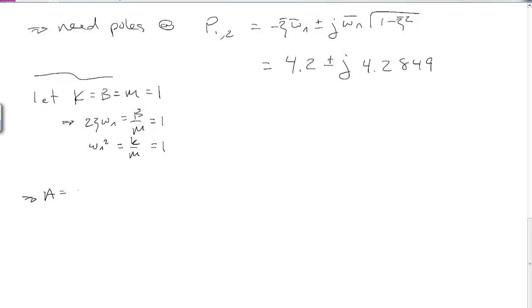So our A matrix ends up being [0, 1; -1, -1], and our B matrix ends up being [0; 1].